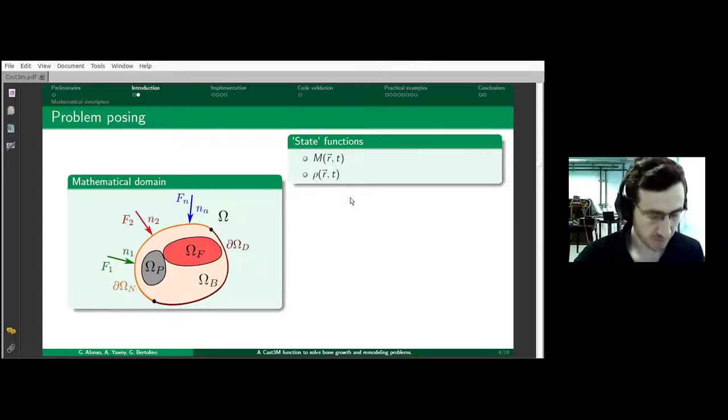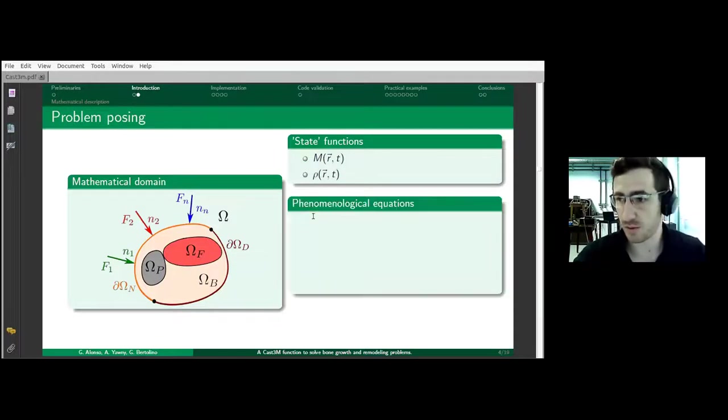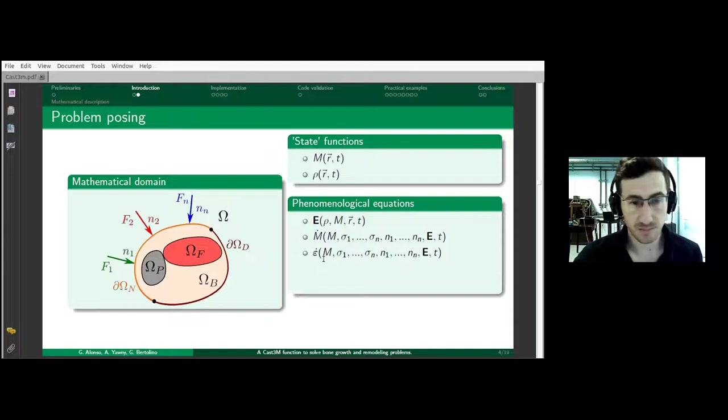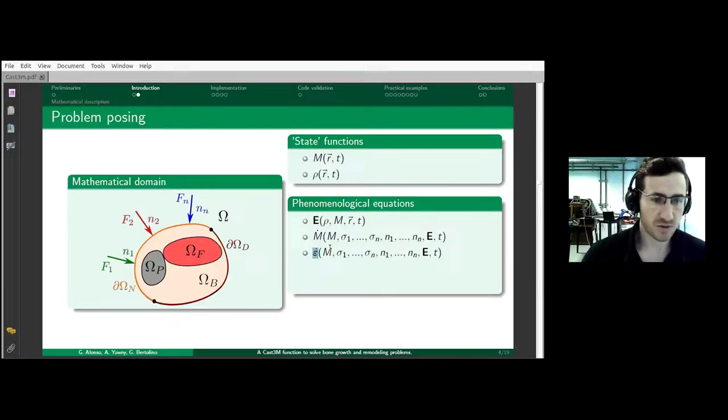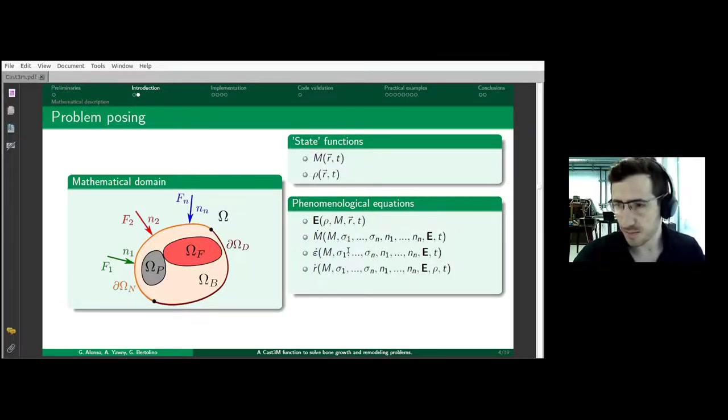Several phenomenological equations need to be known to model this problem. We need to know how mechanical properties depend on density and maturity, how maturity changes in response to applied stress, how growth responds to changes in applied stress. This growth is a tensor, almost like a creep tensor, giving us a growth rate for the epiphyseal plate. We have to know the remodeling rate, which represents how stresses affect the rate at which calcium phosphate is deposited or removed from the bone.